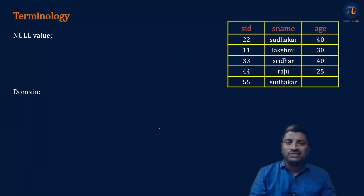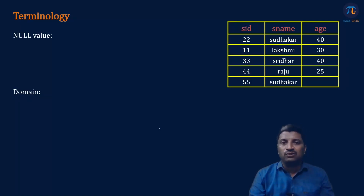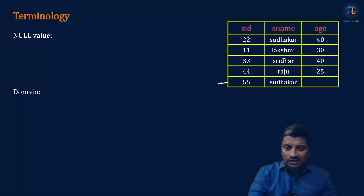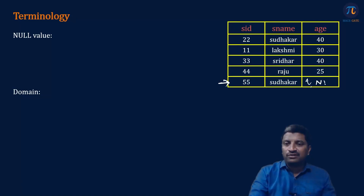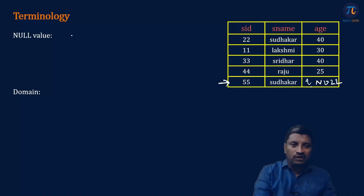The next one is null value. When do we use null value in relations? Suppose for a record we don't know the value of an attribute. In such cases, we write null value. So we use null value to denote or represent an unknown value.